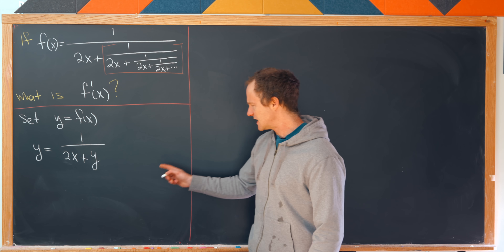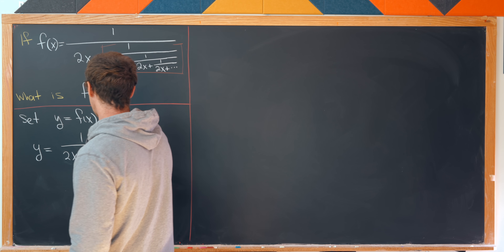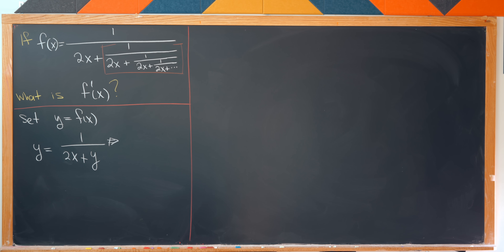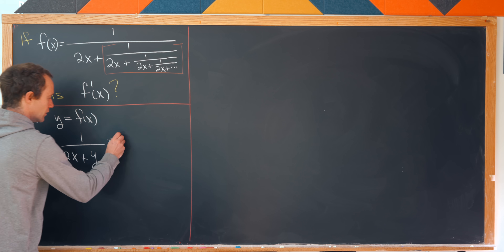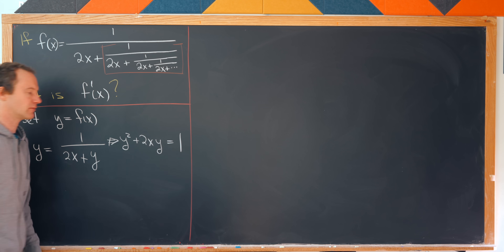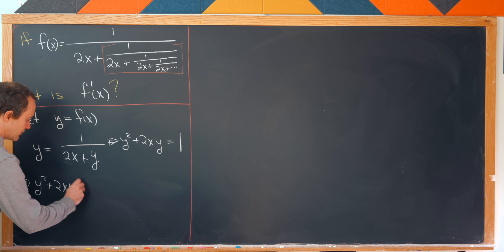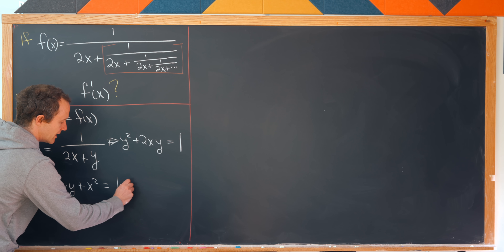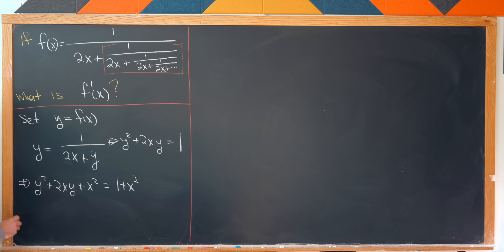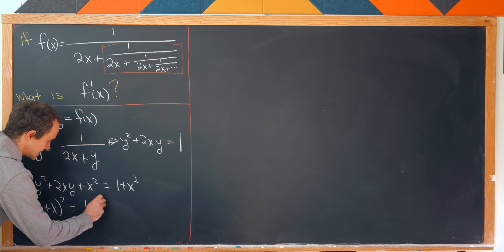We have this nice way of describing y in terms of itself. If we cross multiply we'll get y² + 2xy = 1. We can complete the square: y² + 2xy + x² = 1 + x². Factoring the left-hand side gives (y + x)² = 1 + x².